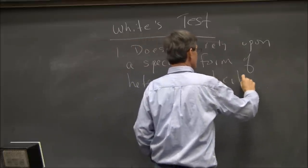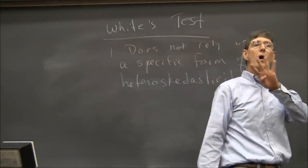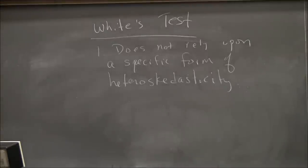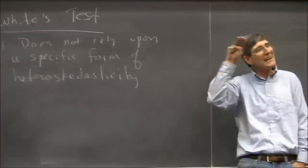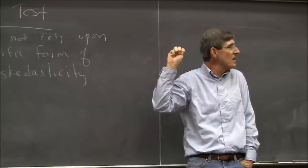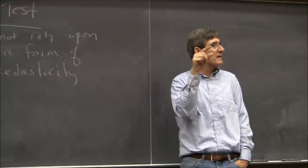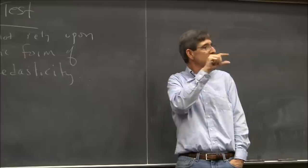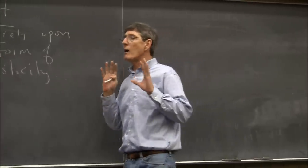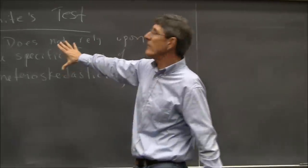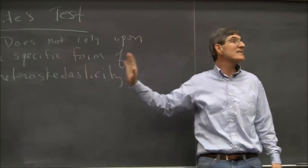So far we've really looked at four models of heteroscedasticity. We needed a model to reduce the parameter space so we could actually estimate this. One said sigma_i squared is alpha times x squared. One was model A: sigma squared is A plus B·Z·T. Then log sigma — those four models. Our previous tests required that we model the heteroscedasticity. White's test does not.